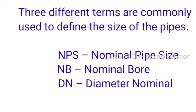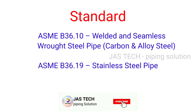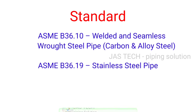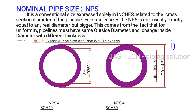Three different terms are commonly used to define the size of pipes: 1. NPS – Nominal Pipe Size, 2. NB – Nominal Bore, 3. DN – Diameter Nominal. Pipe standards are ASME B36.10 for welded and seamless raw steel pipe (carbon and alloy steel), and ASME B36.19 for stainless steel pipe.